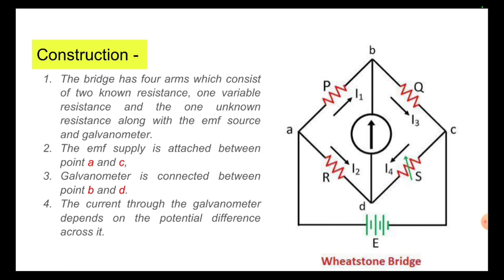The EMF supply is attached between point A and C. Galvanometer is connected between point B and D. The current through the galvanometer depends on the potential difference across it.